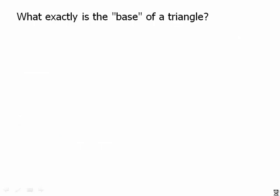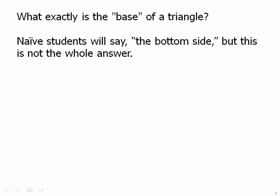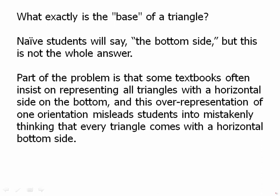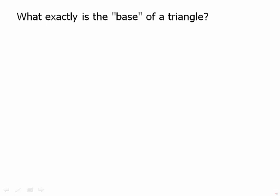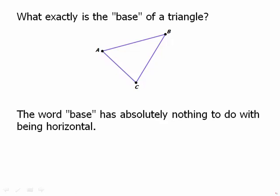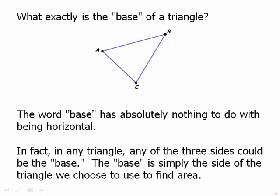What exactly is the base of a triangle? Naive students will say the bottom side, but this is not the whole answer. Some textbooks often represent all triangles with a horizontal side on the bottom, which misleads students into thinking every triangle has a horizontal bottom side. In fact, the word base has absolutely nothing to do with being horizontal. In any triangle, any of the three sides could be the base — it is simply the side we choose to find the area. So any triangle has three possible bases.